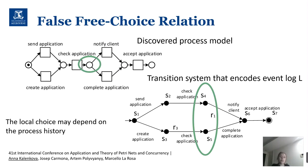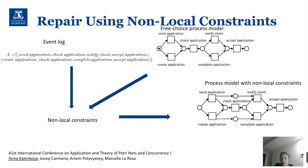When we consider these states, they are not free choice: being in S4 means that we can perform "notify client" but we cannot complete the application, and if we are in S5, we cannot notify the client. So actually, we are not in a free choice when we are in S4 and S5. We say that "notify client" and "complete application" events are in the false free choice relation, and we can define this false free choice relation in our transition system constructed from the event log.